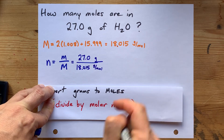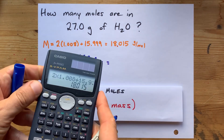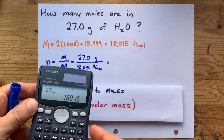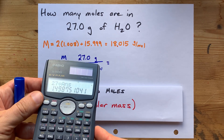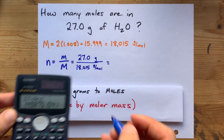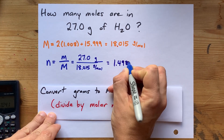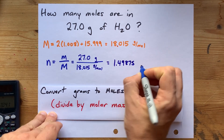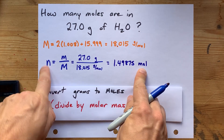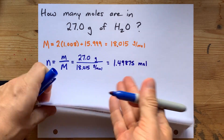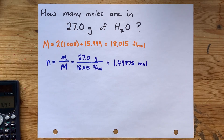The way you calculate number of moles is dividing the grams by molar mass. My mass is 27.0 grams, and my molar mass is 18.015 grams per mole. So I'm going to do 27 divided by that answer. I end up with 1.49875-ish. That's in actual moles — it's little n, after all. I just need to worry about significant figures.